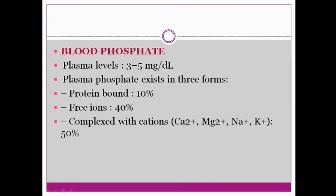Phosphorus is found in three forms: one bound to protein, constituting around 10%; as free inorganic phosphate, constituting around 40%; and in complex with cations such as calcium, magnesium, sodium, and potassium, constituting around 50%.